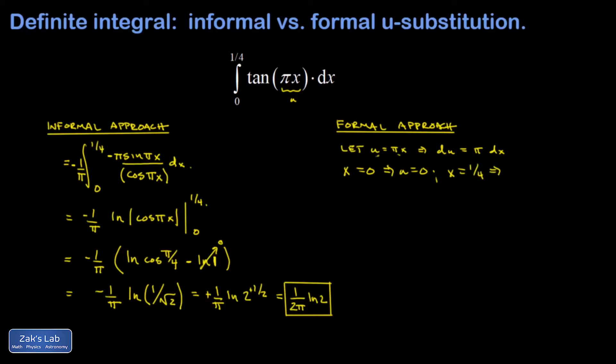So I transform my integral. And to deal with the differential piece, well, du was pi dx, so I can throw a pi into the interior of the integral provided I divide it out in front. And I get pi dx which is du. So I have one over pi times the integral tangent u du. Now I'm still wondering: how do I integrate the tangent function? And the solution is really the same.